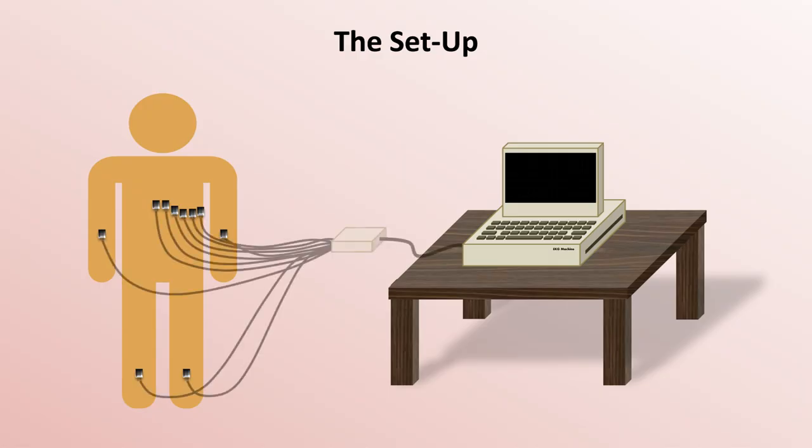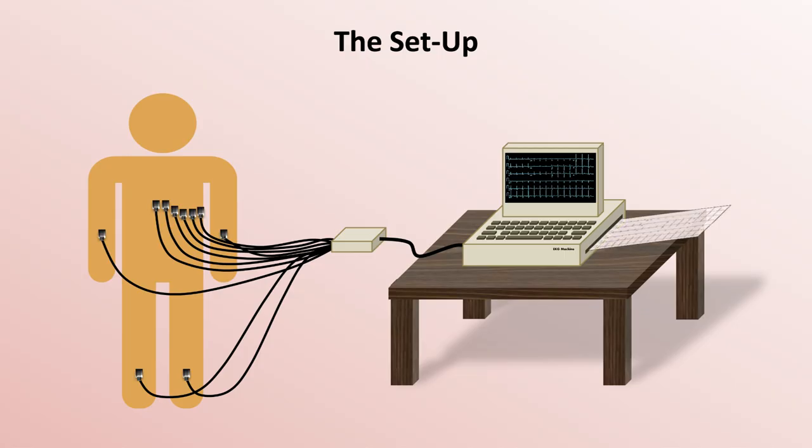Each electrode is connected by a separate wire to a junction shown here, which then connects to the machine. The electrical recording then shows up on the screen and if satisfied with the quality of the data recorded, the clinician can print a hard copy, usually on red or pink grid paper.